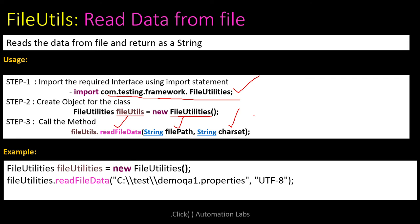The example would look like: fileUtilsObject.readFileData(absoluteFilePath, characterSet). You give the complete absolute path of the file you want to read and specify which character set to use. That's how you read data from an input file.